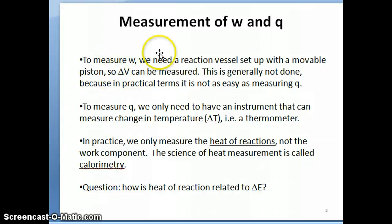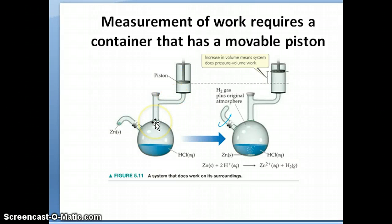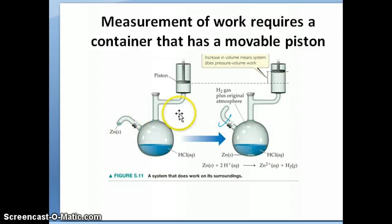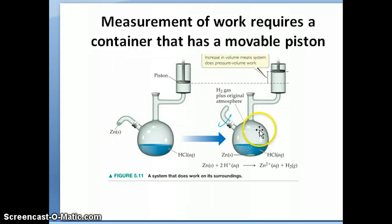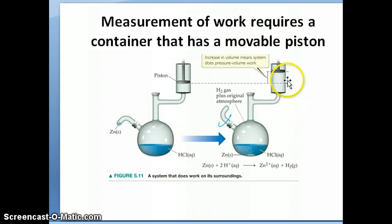Let's talk about how we can actually measure these quantities. To measure W, we basically need a reaction container or reaction vessel with a movable piston. If you carry out a reaction that produces gas and can do expansion work, and you connect that reaction flask to a movable piston that moves freely up and down, then as the gas expands you can calculate the change in volume, and from that calculate W, your work.